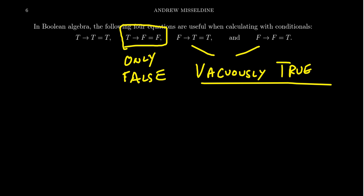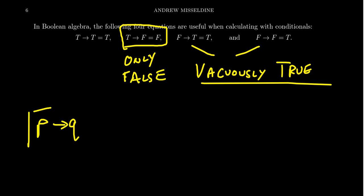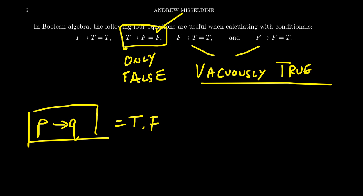Some people conflate the truthfulness of the conclusion with the truthfulness of the conditional. The conditional is a new statement — P could be true or false, Q could be true or false, and the compound P implies Q could be true or false. The truth values of P and Q influence the truth value of the conditional, but they are not the same thing. The truth value of a conditional is not necessarily the truth value of the hypothesis, and definitely not necessarily the truth value of the conclusion. If the hypothesis fails, the conditional is automatically true. The only time a conditional is false is when the hypothesis is true but the conclusion is false.